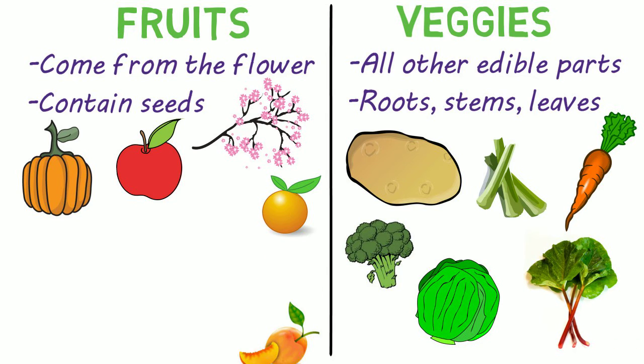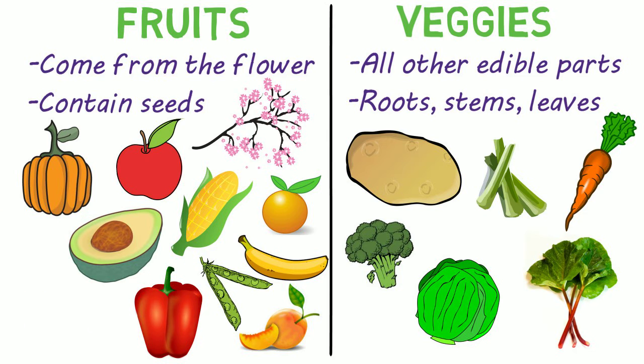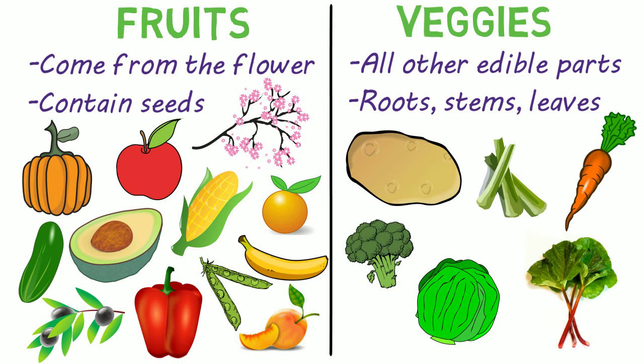Oranges, peaches, and bananas are all fruit, but so are corn, pea pods, peppers, avocados, olives, and cucumbers. They all grow from the flower and contain seeds.